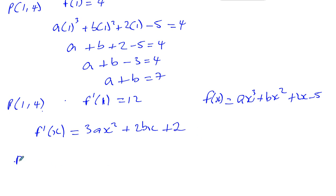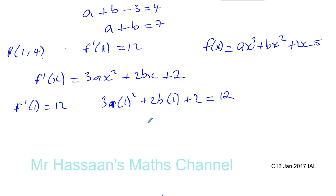So now we know that f'(x), the differential, the gradient function, when you put 1 into it, you're going to get 12. So let's put that in here. We're going to have 3 times a times 1² plus 2 times b times 1 plus 2 is going to give us 12. So we're going to end up with 3a + 2b = 10.